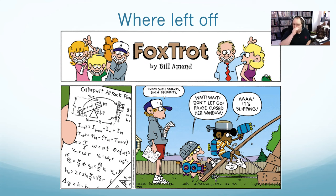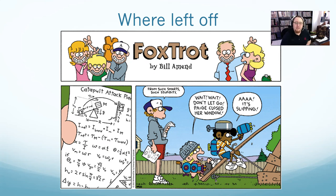We know the idea of projectile motion — that's what chapter three is about. We're just going to do kinematics in two dimensions at once, saying that the acceleration in Y is negative G and the acceleration in X is zero. But what I haven't shown you is some of the effects of it, or how to solve a problem. So it's going to be a bunch of problems and some of the effects.